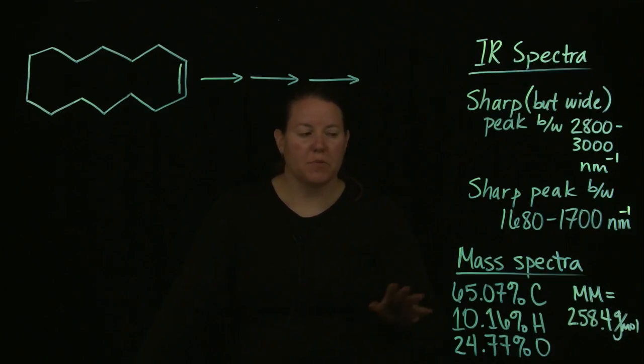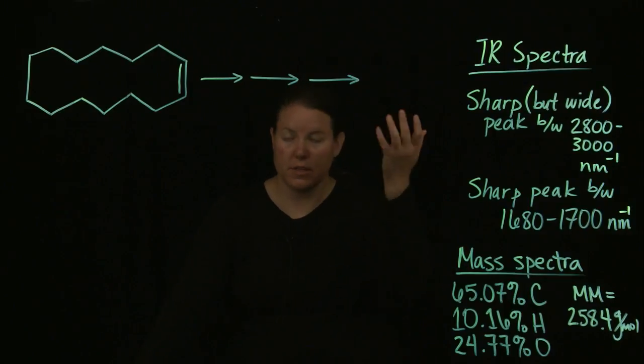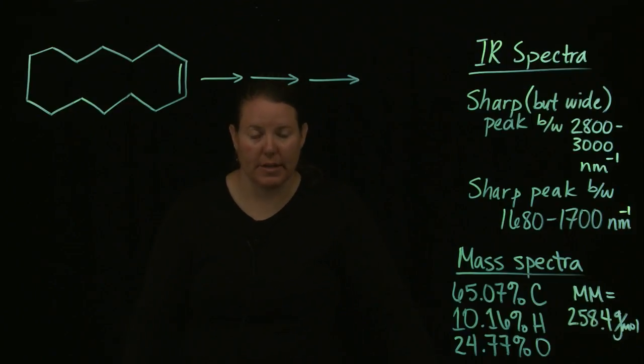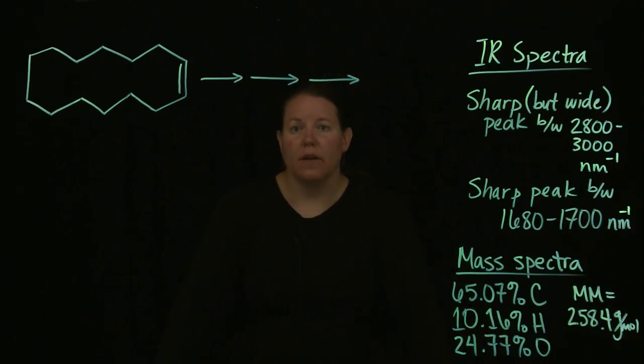The reason why you get all three is because with the elemental analysis, we're going to figure out the empirical and molecular formula. The IR spectra is going to tell me what major functional groups are in that compound. And then the NMR will tell me how the carbons are arranged so that I can really figure out if my product actually matches what should be there.